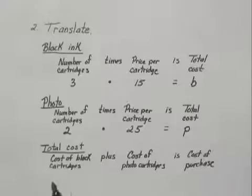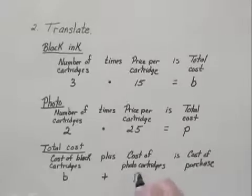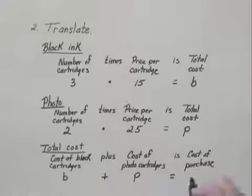Now the last statement we need to translate: the total cost of the black cartridges was B, which we're going to find, plus the cost of the photo cartridges we said was P, and that equals the cost of the purchase, the total cost of the purchase, which we said was T.